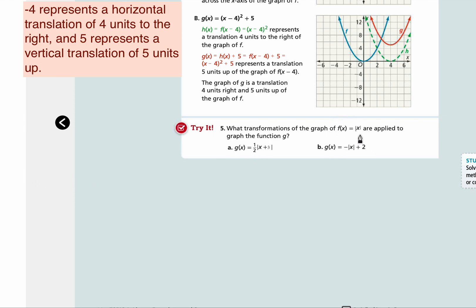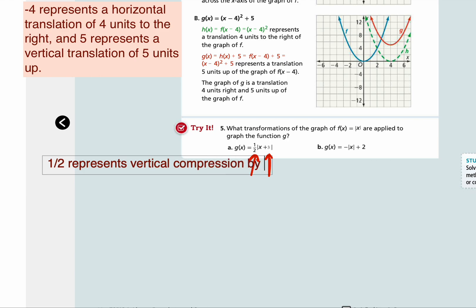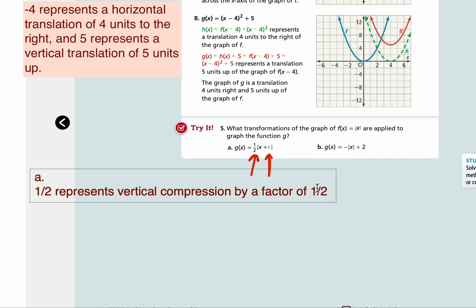Comparing your equations from the parent function to g of x, you have 1 over 2 and plus 3 as the change factors for part a, so you will have two transformations. Is 1 over 2 a vertical or horizontal movement? Because it's outside the function, that is a vertical transformation — it's a vertical compression. 1 over 2 represents a vertical compression by a factor of 1 over 2.